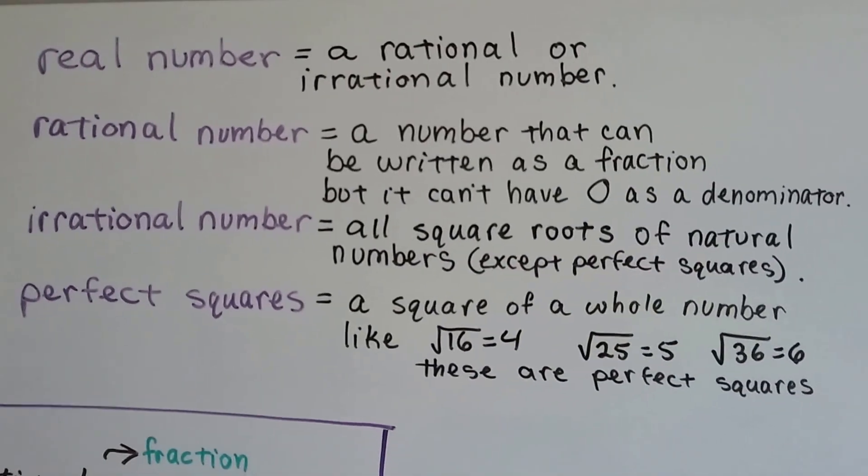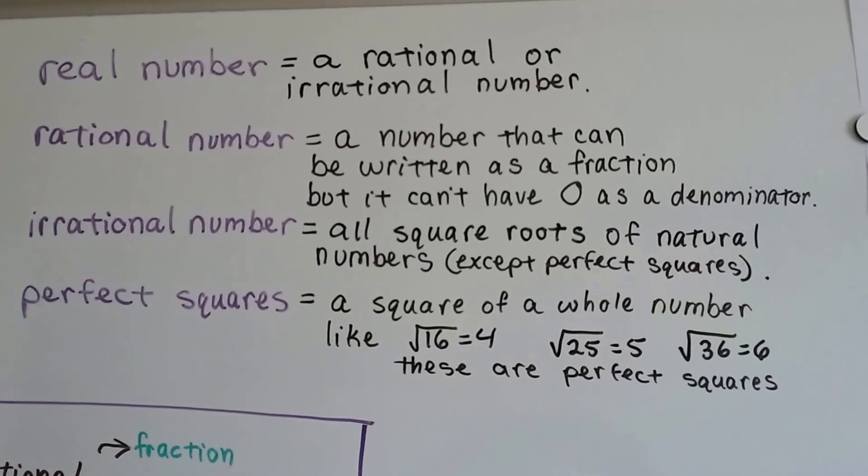Well, a rational number is a number that can be written as a fraction, but it can't have zero as a denominator.